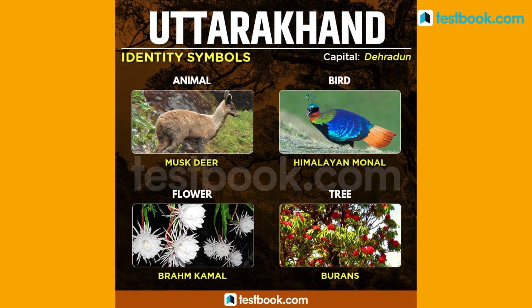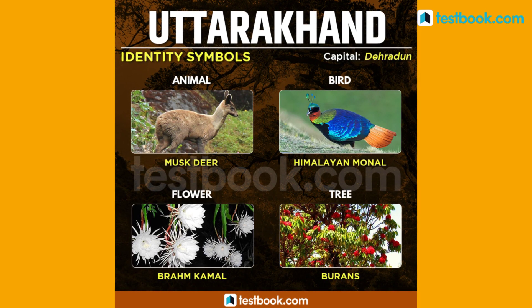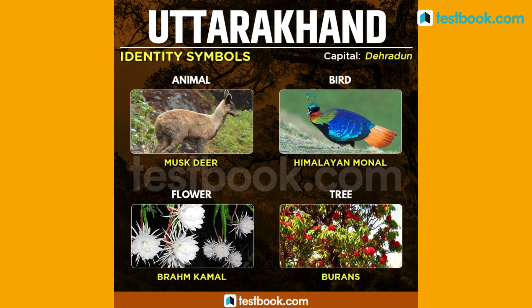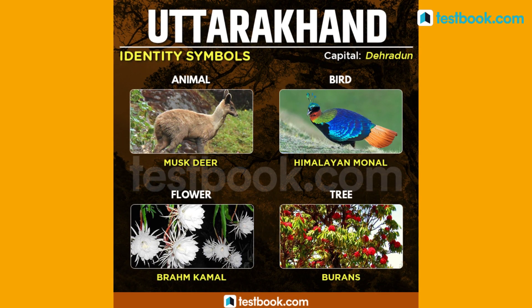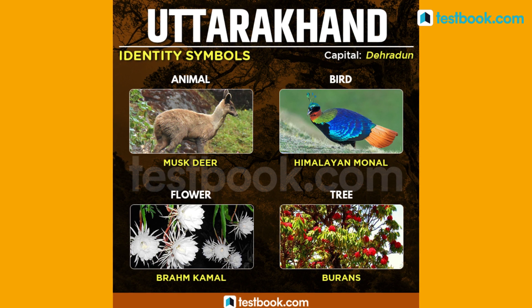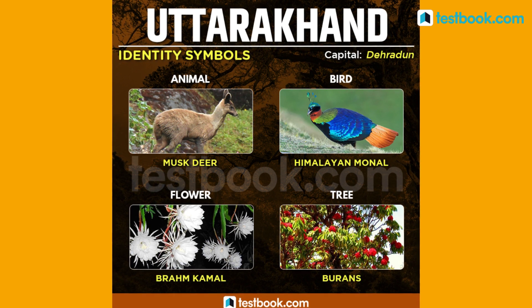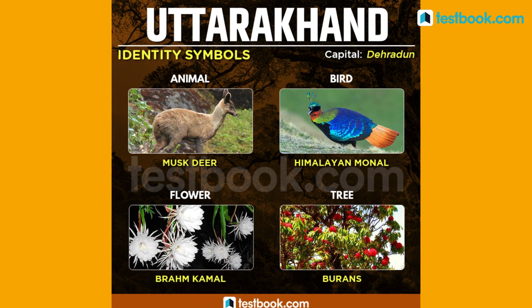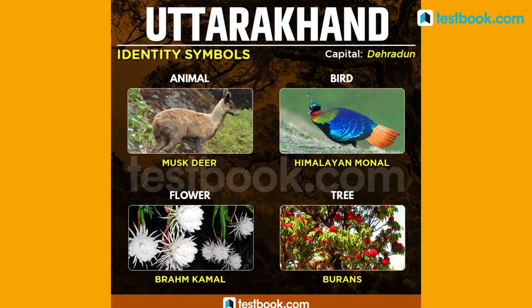For Uttarakhand, the state animal is Musk Deer, state bird is Himalayan Monal, state flower is Brahma Kamal and state tree is Burans.